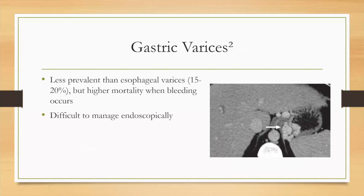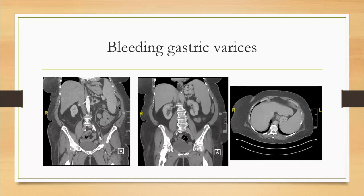Gastric varices are less prevalent than esophageal varices, but clinically important because they generally get bigger, and when they do bleed they are much more difficult to control, particularly endoscopically, with a higher associated mortality rate. Here's a CT of a patient with gastric varices who underwent a GI bleeding protocol — you can see the different phases including the coronal arterial phase and a more delayed phase, which can affect your visualization of varices depending on contrast bolus timing. There is also a nice gastrorenal shunt allowing a potential endovascular treatment approach.